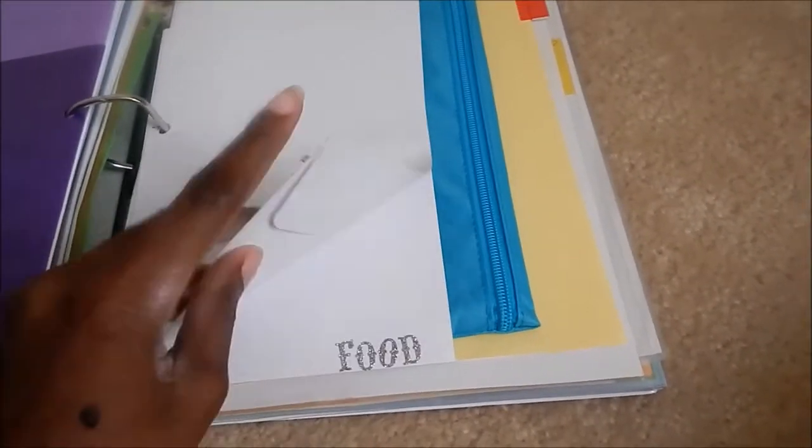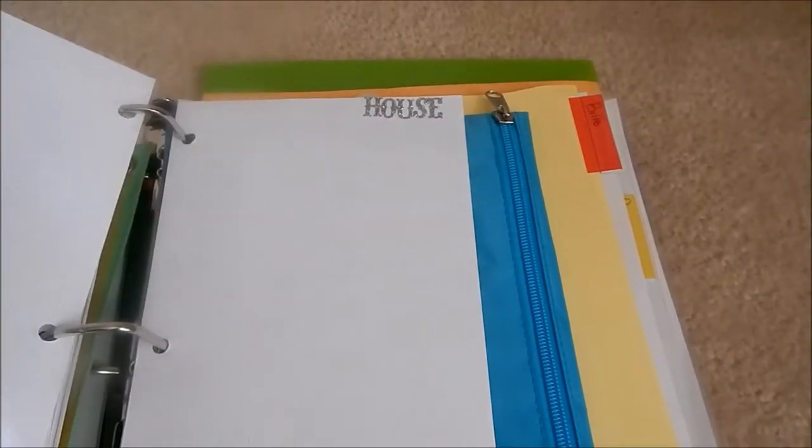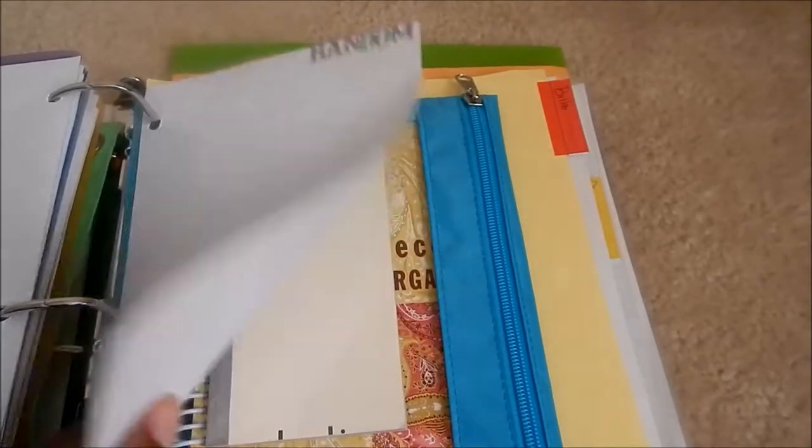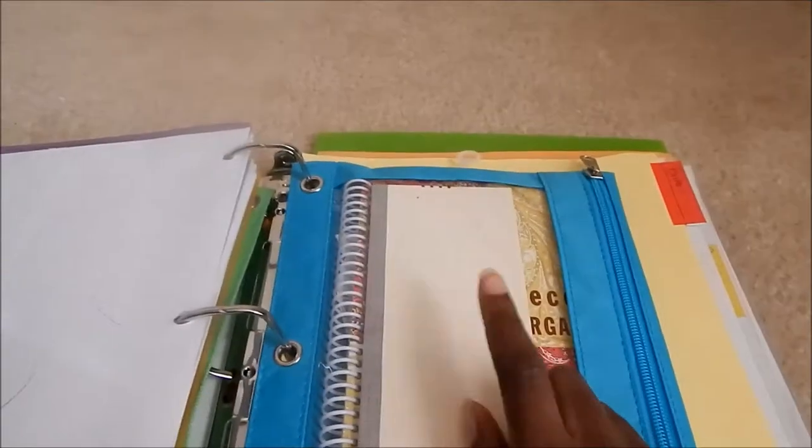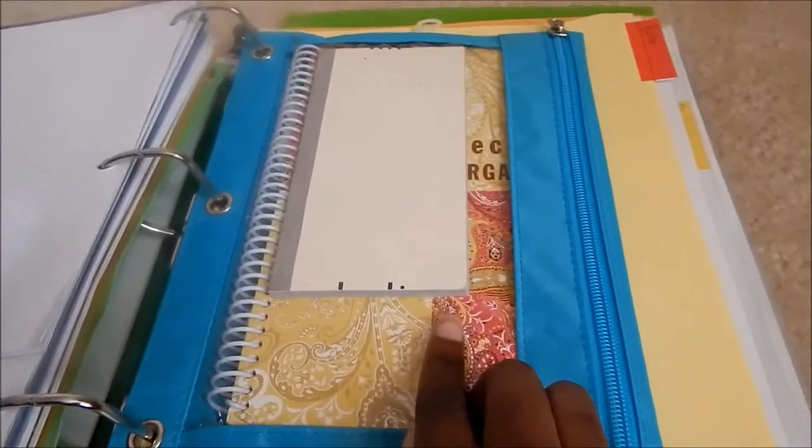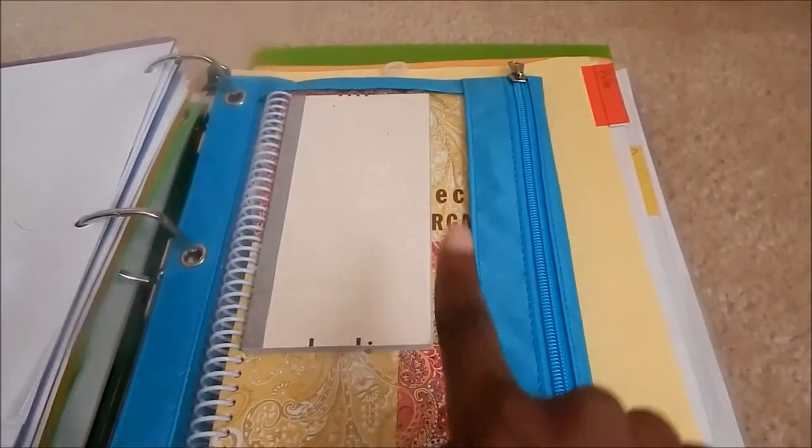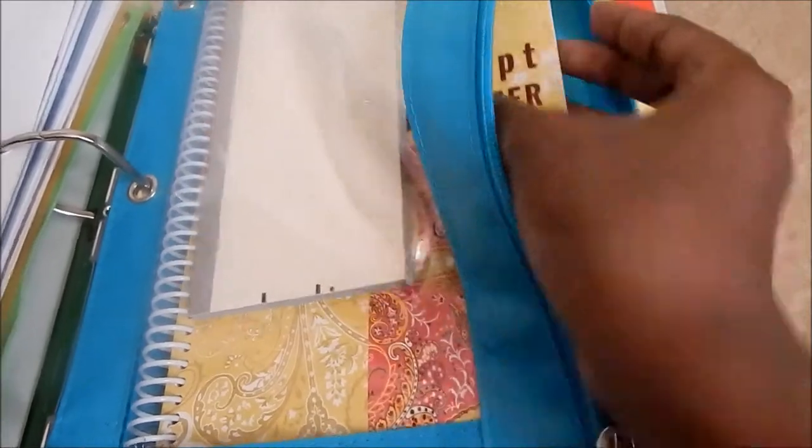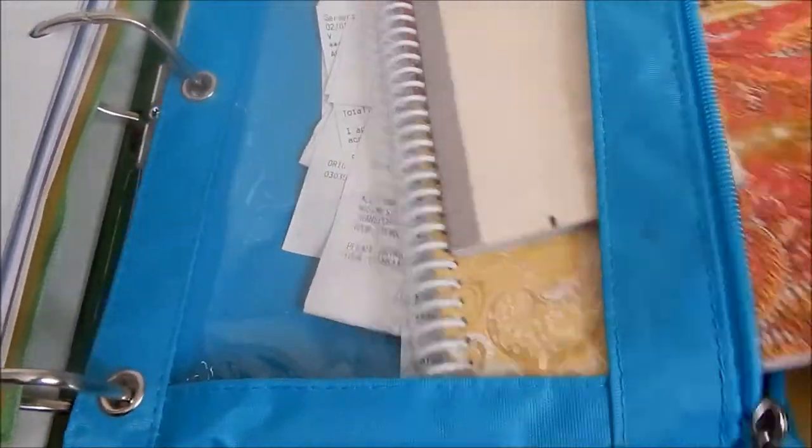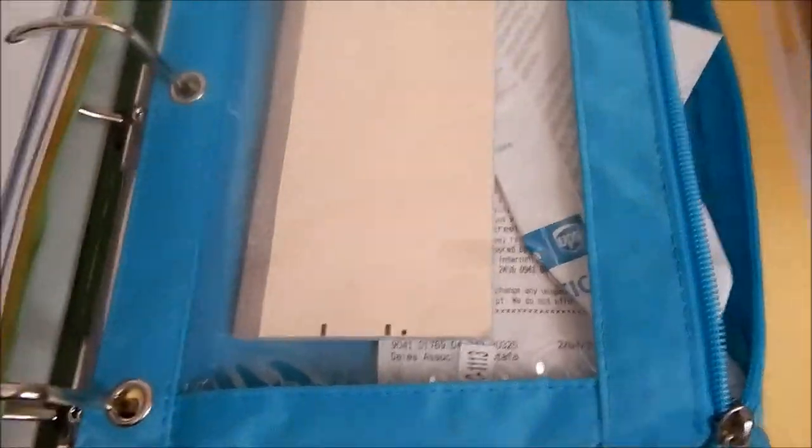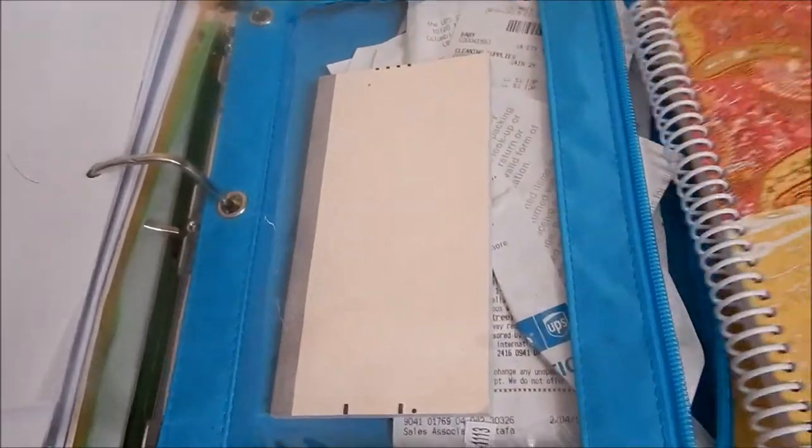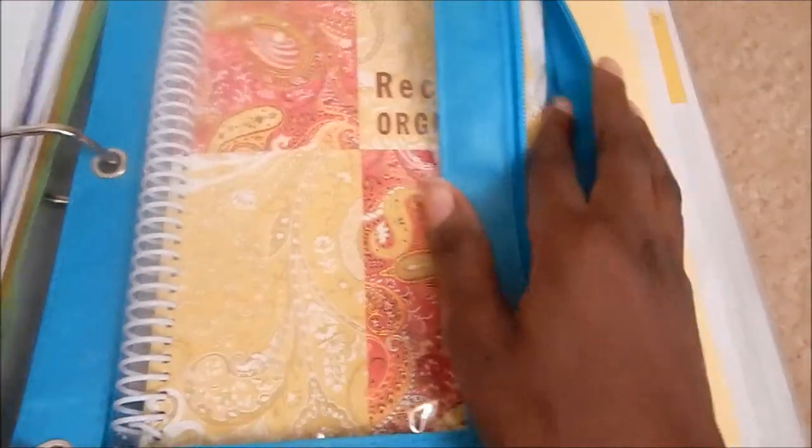Next is financial. We use the envelope system by Dave Ramsey: gas, food, emergency, house, and random. This is where I keep my checkbook, which I rarely ever use, probably only once. In here is a receipt book from Big Lots with all my receipts for this month. Let me know if you want to see the receipt book and family medical in depth.